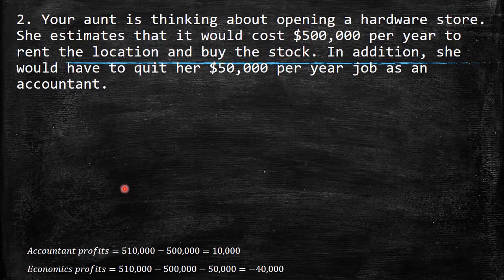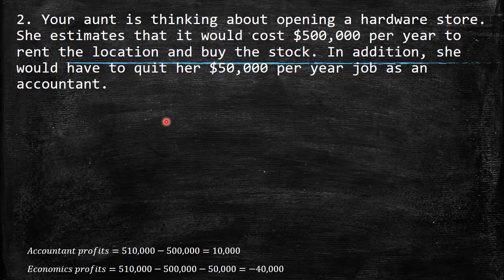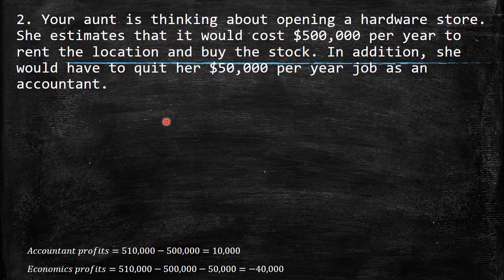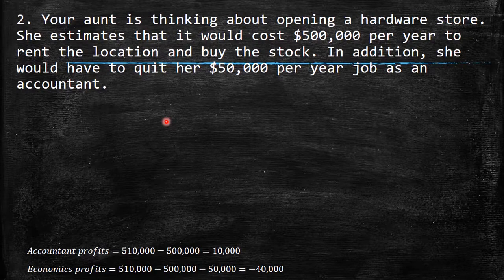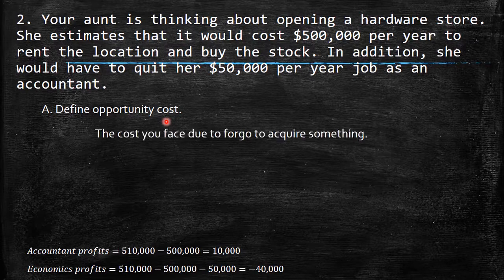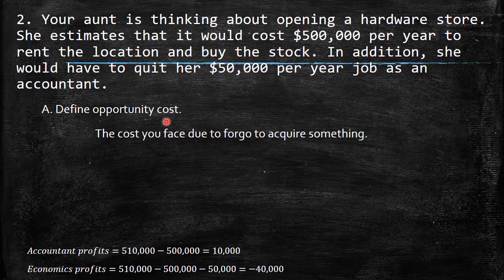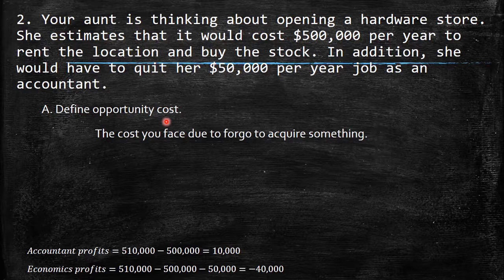Question two: your aunt is thinking about opening a hardware store. She estimates it would cost $500,000 per year to rent the location and buy stock. In addition, she would have to quit her $50,000-per-year job as an accountant. First, define opportunity cost — it's the cost you forgo to acquire something, what you give up because you're doing something else.